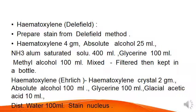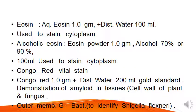Next is Hematoxylin Ehrlich: Hematoxylin crystal 2 gram, absolute alcohol 100 ml, glycerine 100 ml, glacial acetic acid 10 ml, distilled water 100 ml. These stain the nucleus. Aqueous Eosine is made from 1 gram eosine plus distilled water 100 ml, used to stain cytoplasm.